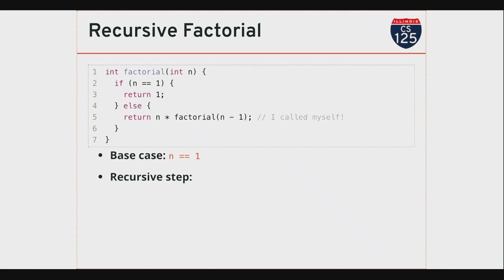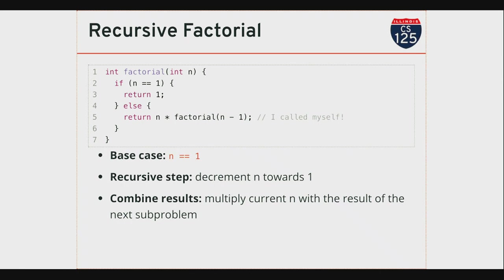My recursive step is where I'm making the problem smaller—that's the factorial of n-1 call. If I don't know how to compute the factorial of n, I know by definition it's n times the factorial of n-1, so I've produced a smaller problem. The combination of results is the multiplication step. This meets all the criteria we have set up for a recursive algorithm.